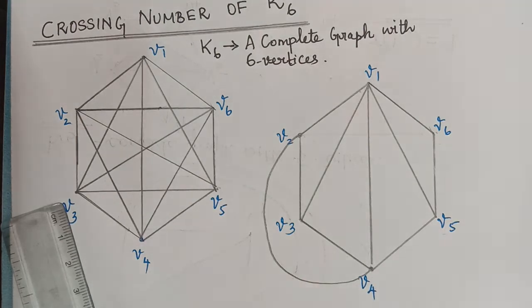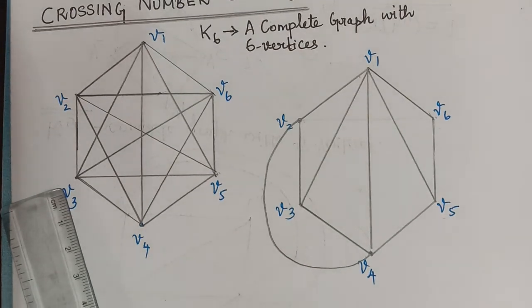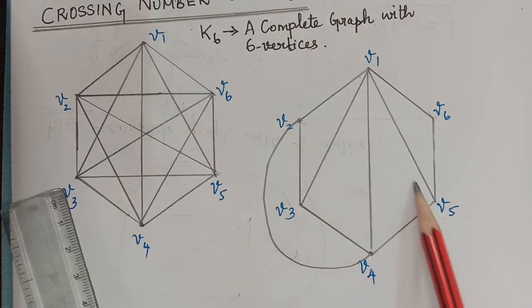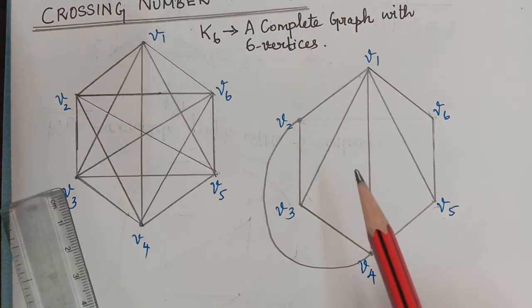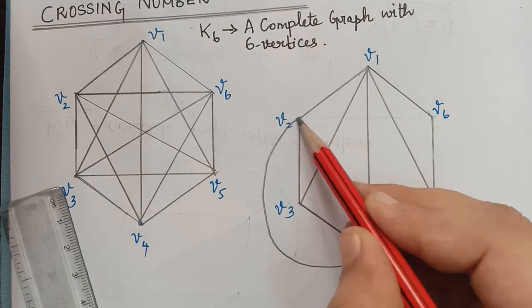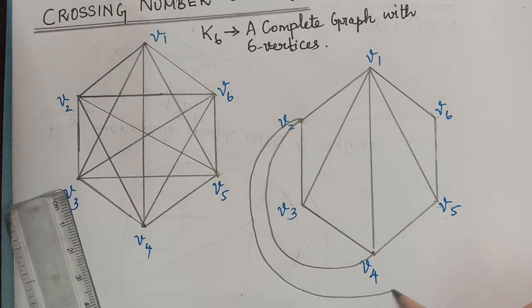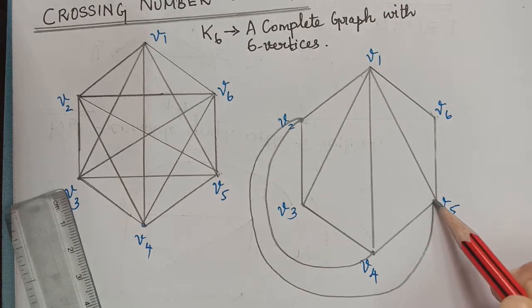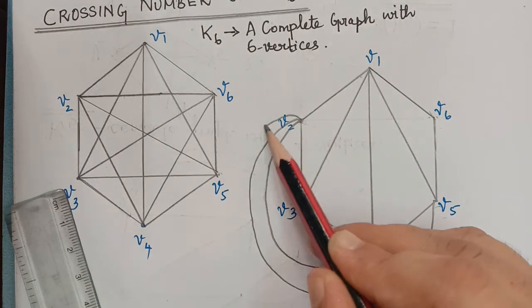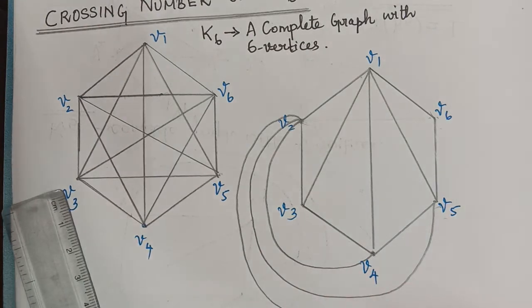V3 to V4, and then we have to draw an edge between V2 and V5. Again if we draw it in this manner, there will be a crossing. So we can draw this in this manner, and then again V2 to V6 we can draw it in this way.